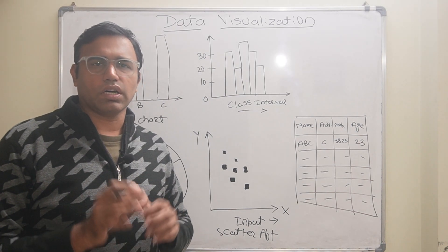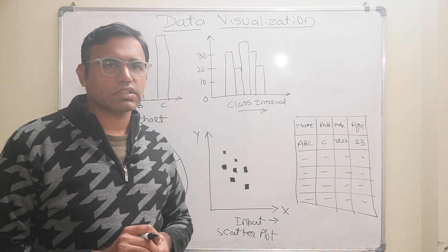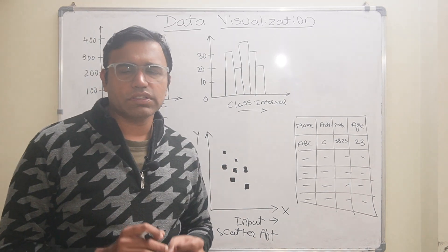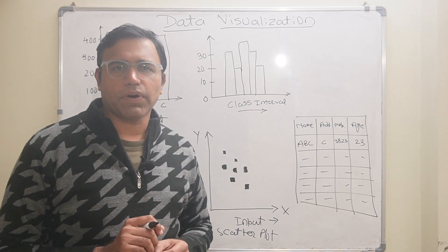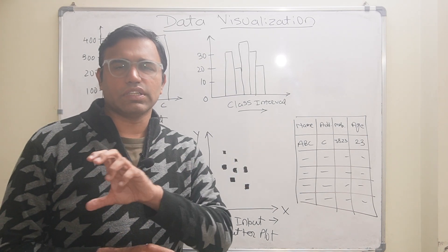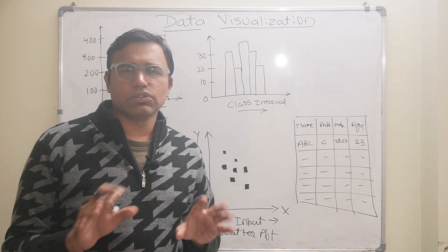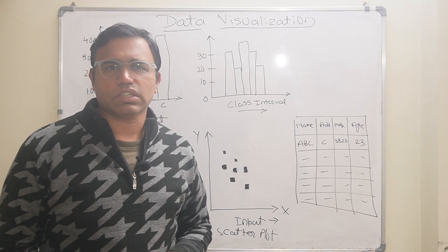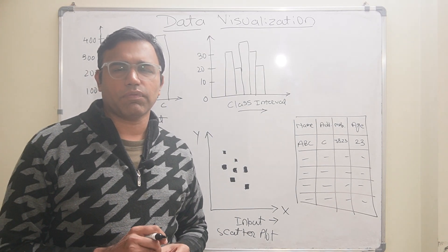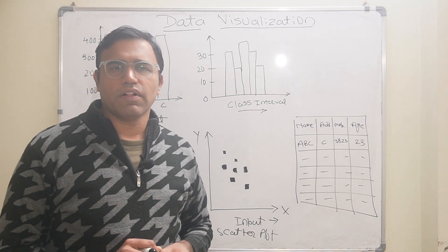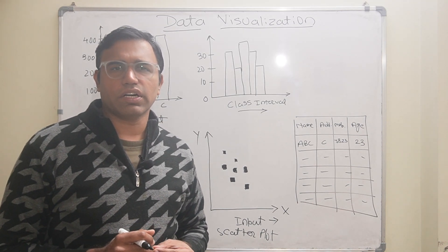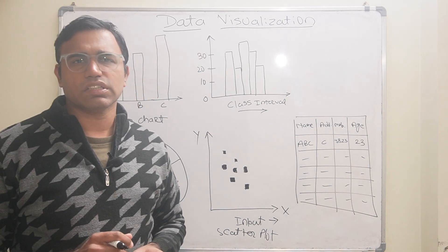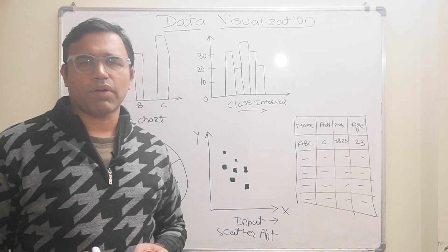There are two ways to arrange data: in unstructured format and in structured format. Unstructured format means data is written in the form of English sentences with no relationship between the data. Structured format means data is arranged in the form of rows and columns, like an Excel sheet or a database, where you can define relationships between data using primary key and foreign key relationships.